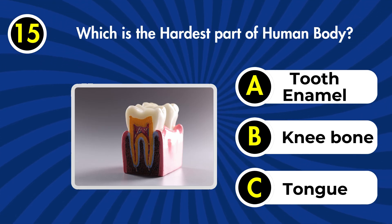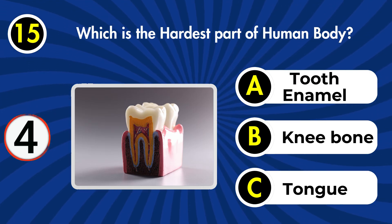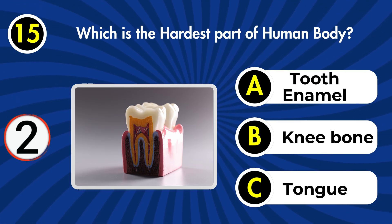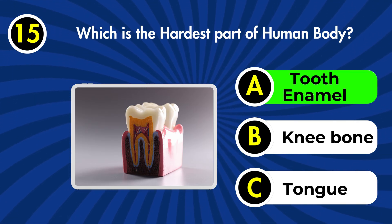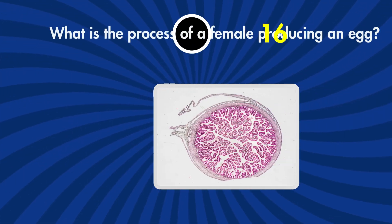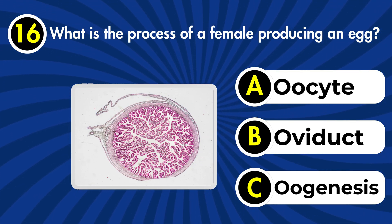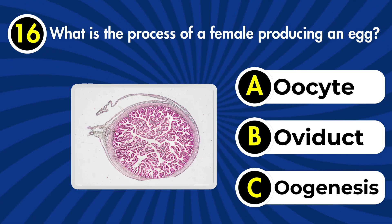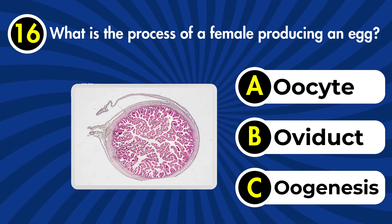Next question: which is the hardest part of the human body? a) Tooth enamel, b) knee bone, c) tongue. Correct answer: a) tooth enamel.